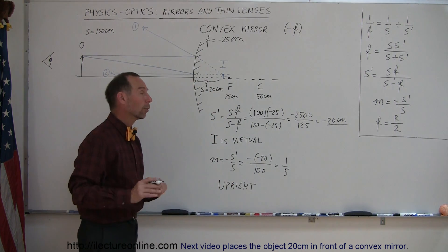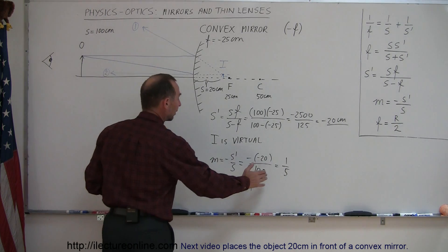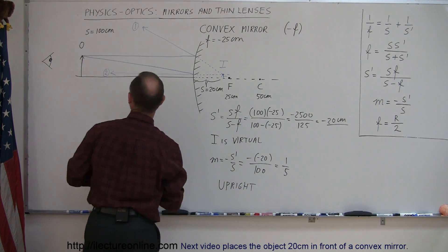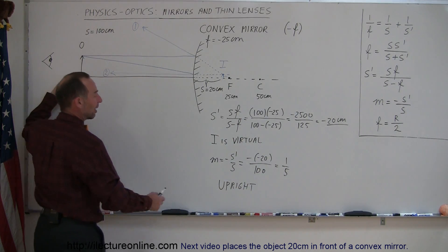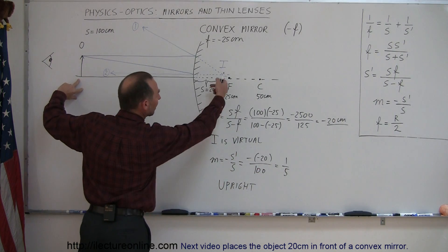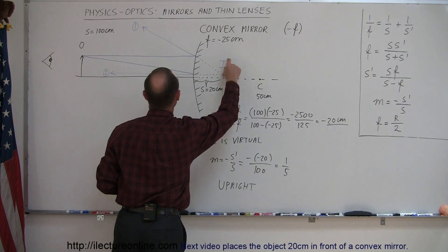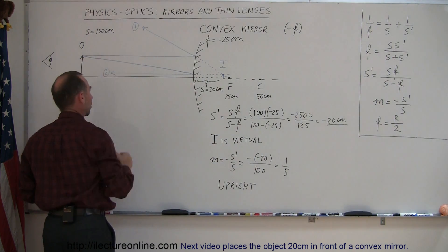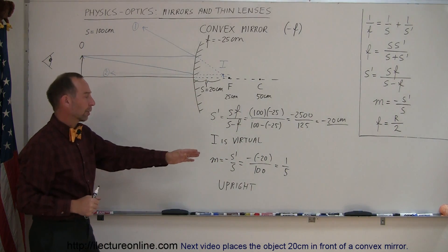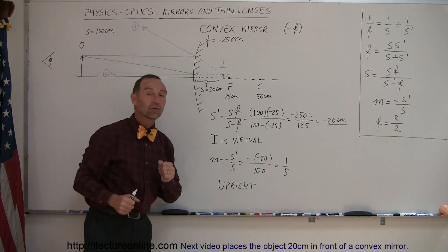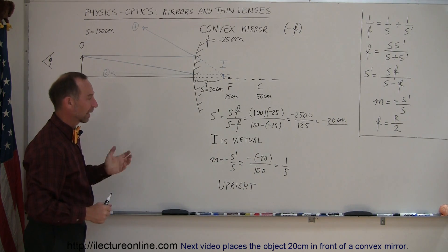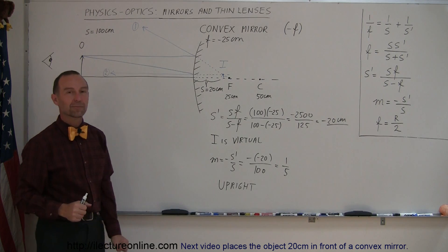Now, one little caveat there. It's true that the image is upright, but what if the object had been upside down, and you have a positive magnification? Of course, then the image will also be upside down. The positive number here simply means that the image is in the same direction as the object. We usually start with a positive object, and therefore when the magnification is positive, we assume the image to be upright as well, and that's how you do that with a convex mirror.